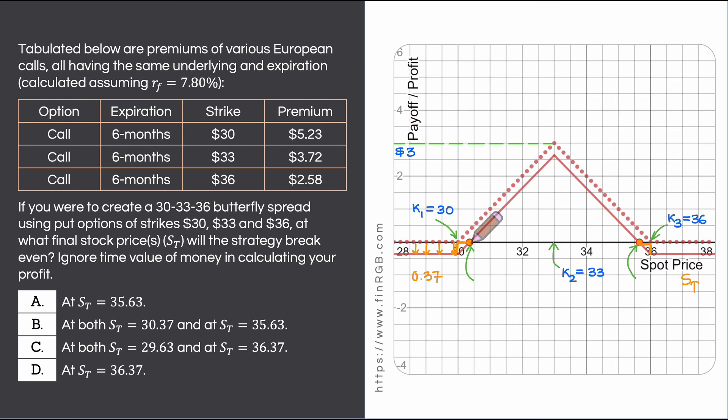This stock price is very simply 30 plus this distance which I have said is the same as this distance. So it is 30 plus 0.37 and that is 30.37.